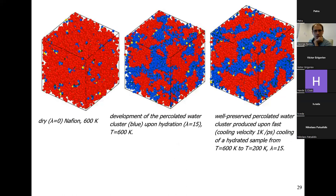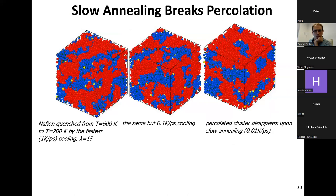Looking at water cluster morphology: dry Nafion shows isolated clusters (red), but upon adding water at high temperature a percolated path (blue) spans the entire simulation box. Upon fast cooling this percolation survives, but upon slow cooling it breaks. Comparing boxes cooled at different rates, you can see that if the system is allowed to relax, water domains rearrange and connectivity is disrupted — directly connected to the experimental observation of non-monotonic proton conductivity.